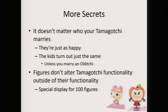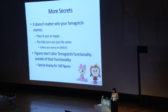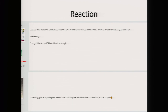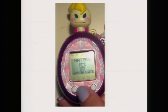The debug mode helped me figure out some other secrets. For example, I found out it doesn't matter who your Tamagotchi marries — they're just as happy and the kids turn out just the same. The exception is a well-known Tamagotchi trick: if you marry a certain Tamagotchi called an Oldie, you do get a special toddler. I also found that there had been debate about whether having a figure on your Tamagotchi without using it changes its behavior — the answer is no. There's just a special display if you have a hundred figures. When I put this online, I got some interesting reactions, including my personal favorite: 'Interesting, you are putting much effort into something that most consider not worth it. Kudos to you.'